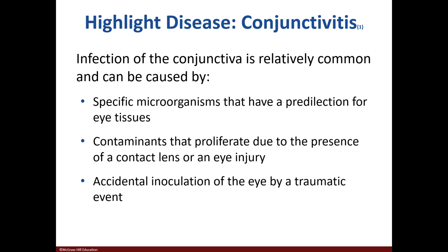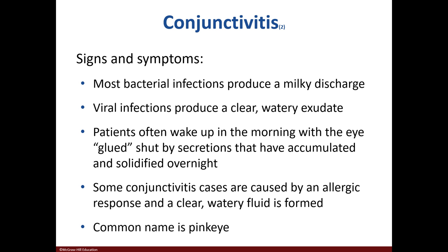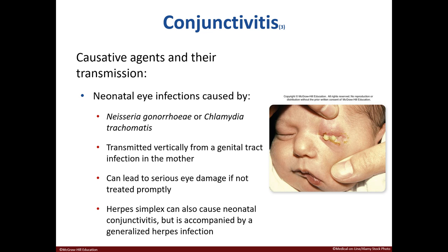Conjunctivitis is an inflammation of the conjunctiva, or the membrane that covers our eye. It could come from contaminants, contacts, or an eye injury. If caused by bacteria like Streptococcus pneumoniae, a milky discharge will be seen along with the eye being matted shut in the morning. Viral infections tend to cause a clear, watery discharge. Conjunctivitis is commonly known as pink eye. Neonatal conjunctivitis can be caused by Neisseria gonorrhoeae or Chlamydia, and the mode of transmission is vertical during delivery. If not treated with an antibiotic, it can lead to damage.